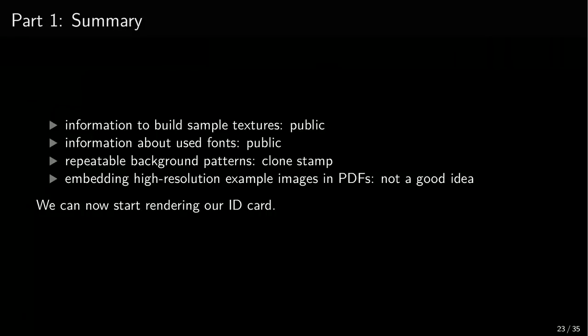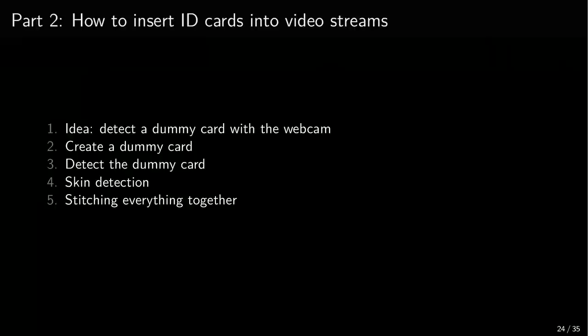Now we go on with actually rendering the ID cards in a video stream. There are five steps: first we have to detect the card somehow using a dummy card in the stream, then actually detect the card markers, remove the skin if we move a finger in front of our fake card, and then put everything together. This is basically the easy part.